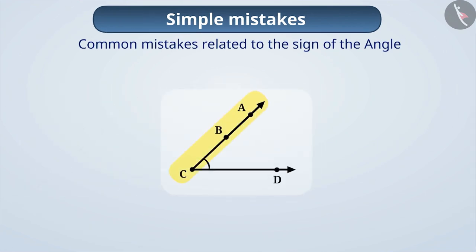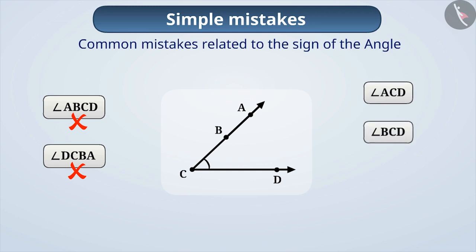If there is more than one point on the ray in a figure, it is wrong to use more than three letters while writing the name of the angle. That is, the name of the given figure cannot be written as angle ABCD or angle DCBA. When naming an angle, it is mandatory to have one point denoted by a letter on each ray and the letter denoting the vertex.